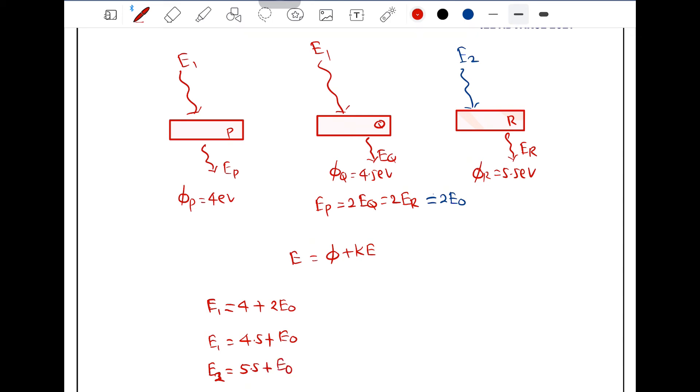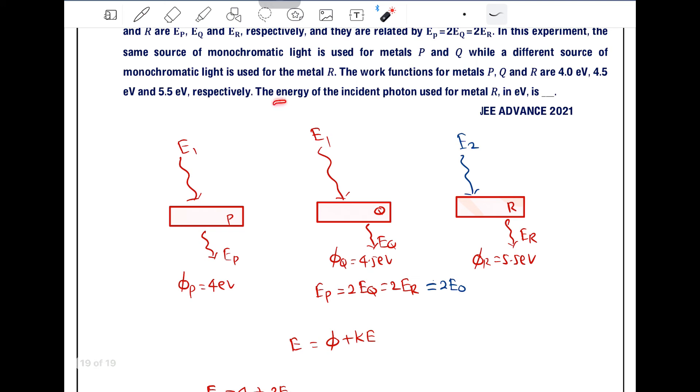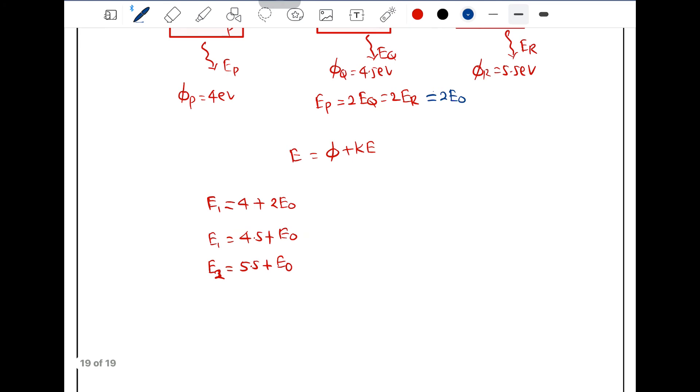Now you have 3 equations. It is asked to find the energy incident or energy of incident photon used for metal R. So E2, it is asked to find the value of E2 here. Now we have 3 equations. Do one thing, subtract these 2 equations.